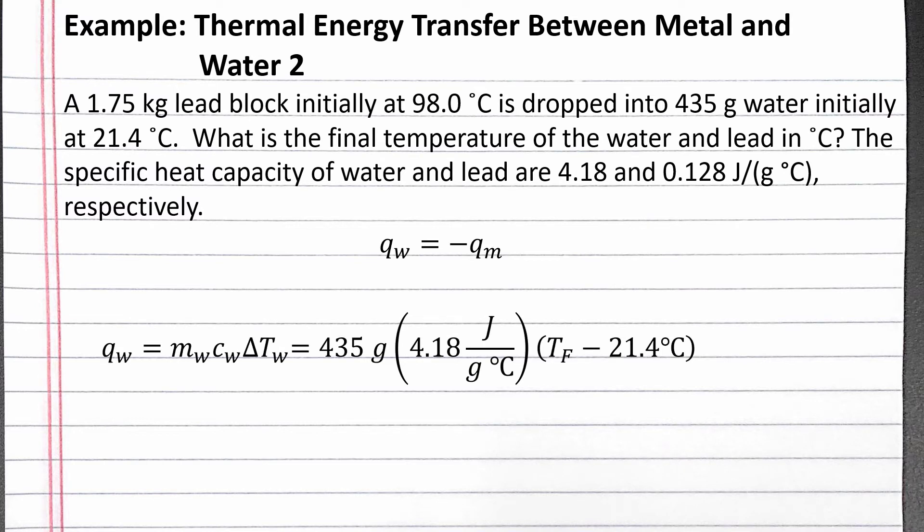We have 435 grams of water, 4.18 joules per gram degrees Celsius for the specific heat capacity, and the change in temperature is final temperature minus initial temperature, which is T final minus 21.4 degrees Celsius.